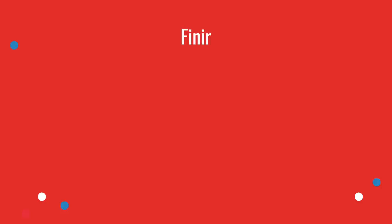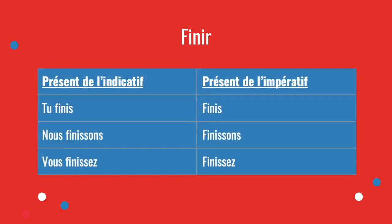Let's take an example with finir (to end). In le présent de l'indicatif: tu finis, nous finissons, vous finissez. In le présent de l'impératif, you just remove the pronoun: finis, finissons, finissez. It's super simple to build — the conjugation is essentially the same as the normal present.